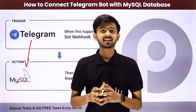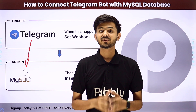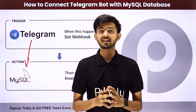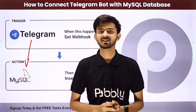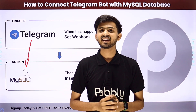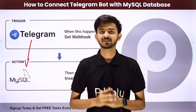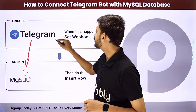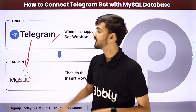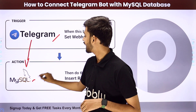For creating this integration, we are going to use Pabbly Connect, which is an amazing software for automation and integration. In Pabbly Connect, we are going to use Trigger and Action. In the Trigger application, I am going to use Telegram. In the Action application, I am going to use MySQL.